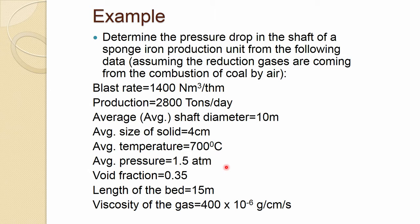We will work through an example based on a shaft-type sponge iron production unit. Determine the pressure drop in this shaft furnace from the given data, and modify the calculation assuming the reducing gases are coming from the combustion of coal by air. When reducing gases come from combustion of coal by air, you have CO, CO₂, and nitrogen — similar to blast furnace gases.